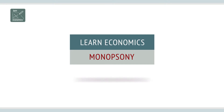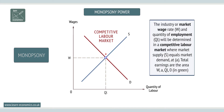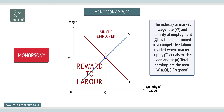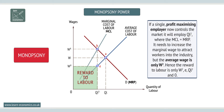Monopsony. A monopsonist can set wages and employment below those in a competitive labour market. So, why is this? Graphically, if a single employer controls the market, it will employ quantity QL2, where the marginal cost of labour, MCL, equals the marginal revenue product, MRP. The monopsonist needs to increase the wage rate to attract additional workers into the industry, but the average wage is only W2.